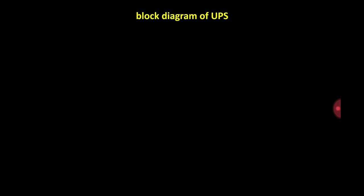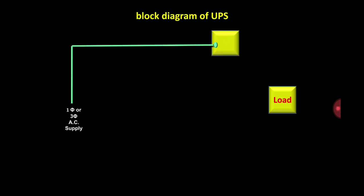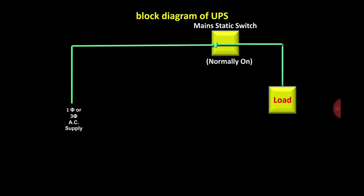We are getting the main supply from the mains board — single phase or three phase AC supply. This main supply is given to the load. When we connect the main supply to the load, we insert one switch called the main static switch, and this main static switch is normally in the ON condition. So the load is receiving supply from the main line and our load is on.